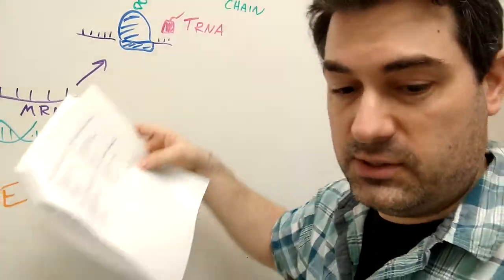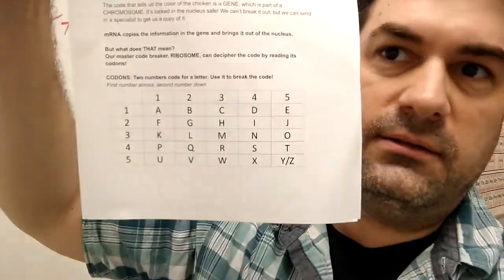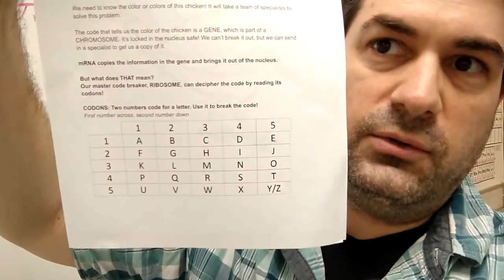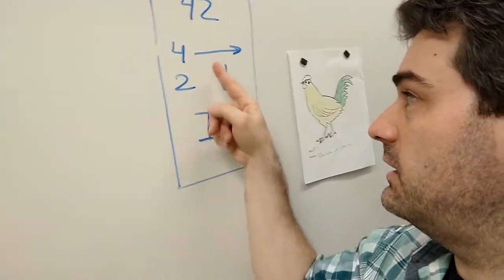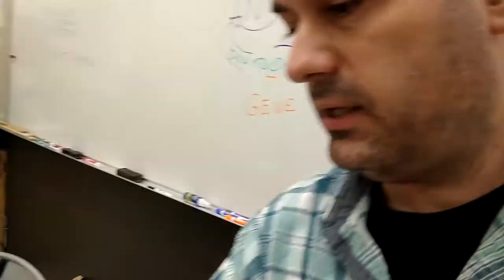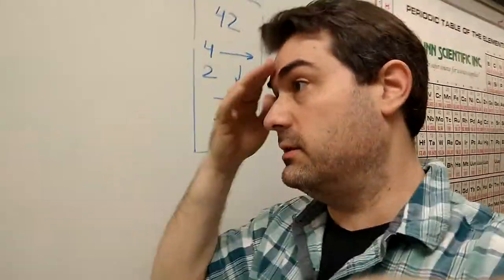They give it to the person that's their ribosome. The person who's their ribosome uses this translator chart to turn that two-digit number into a letter. For instance, on our chart, the number 42, it's four across and two down, and on our chart here, that's the letter I. It's a code system I came up with to be able to translate from numbers into letters.